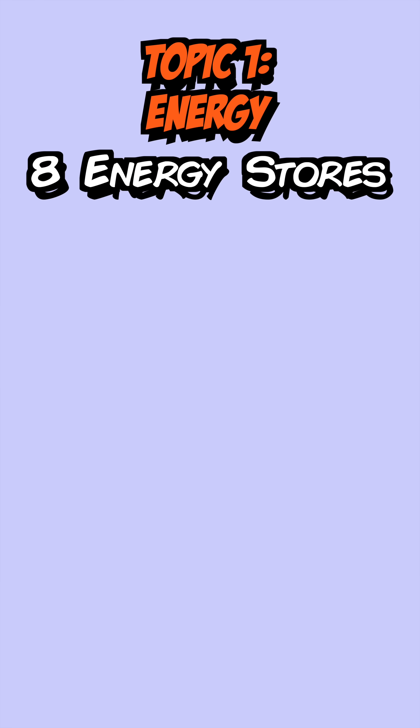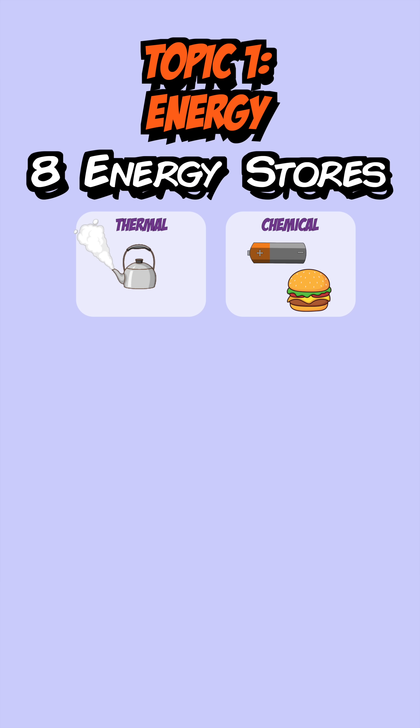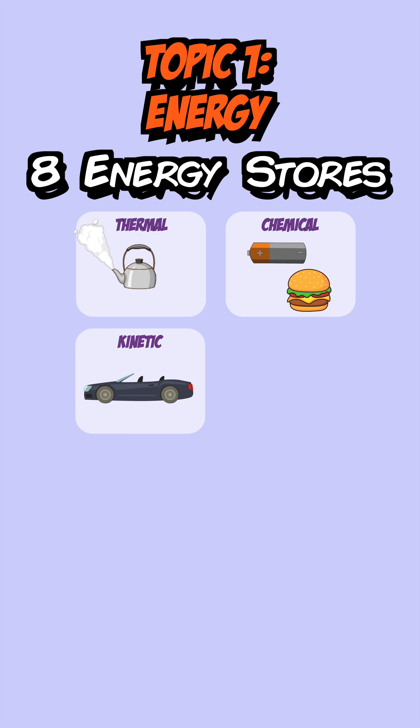There are eight energy stores you need to know about. Thermal energy stores, which increase the hotter an object gets. Chemical energy stores, which is energy released by a chemical reaction. Kinetic energy stores, which is energy that moving objects have. Gravitational potential energy stores, which increase the higher an object gets.